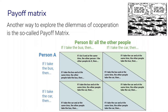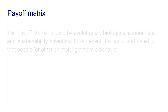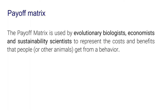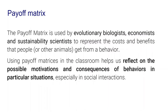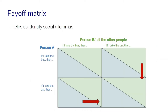And so on — for all the other fields, this is how we would fill out a payoff matrix, but you can explore this more in the actual lesson. Generally, the payoff matrix is used by evolutionary biologists, economists, and sustainability scientists to represent the costs and benefits that people — or sometimes other animals and living beings — get from a behavior in a social interaction. We can use the payoff matrix as a tool in the classroom to reflect on the possible motivations and consequences of behaviors in particular situations. In this way, a payoff matrix also helps us identify so-called social dilemmas.